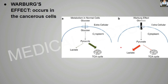But what happens in the Warburg effect? In the cancerous cell, excess glucose enters inside the cell into the cytoplasm, and most of this pyruvic acid actually goes on to lactic acid formation, and very little goes inside the TCA cycle. This is the Warburg effect.